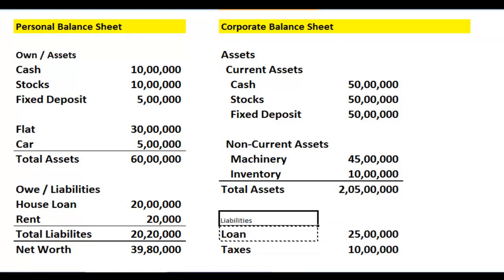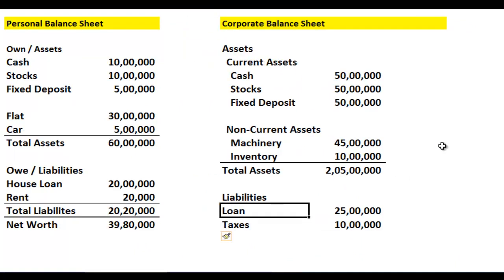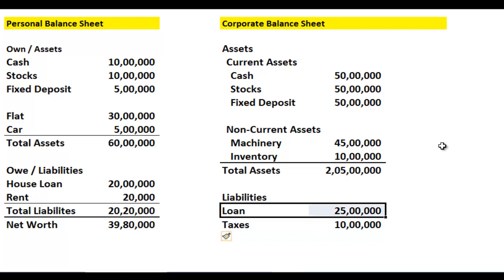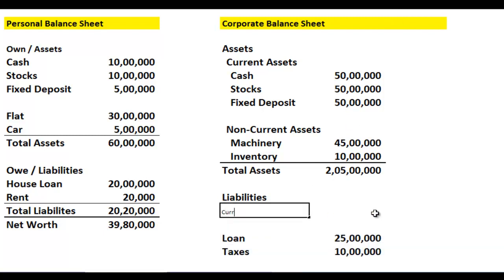With liabilities, you have the concept of current liabilities and non-current liabilities. How do you decide which is which? Take this loan for example — even though the entire loan amount is 25 lakhs, you probably don't owe the entire 25 lakhs this quarter or this year. It's a 10-year loan, so you might owe only about 1 lakh this quarter.